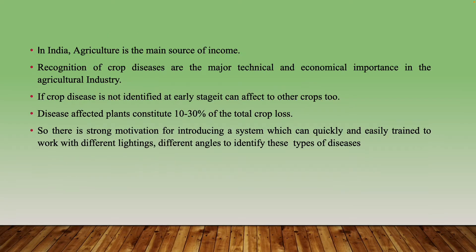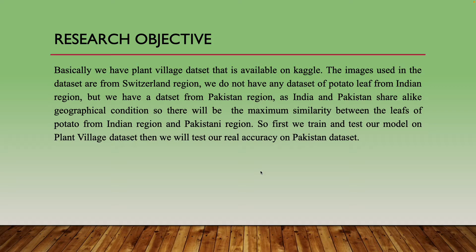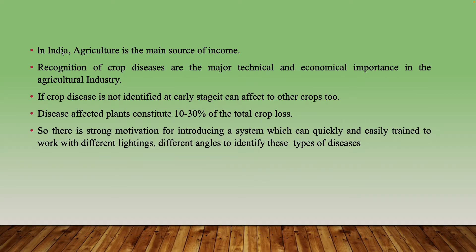The treatment for early blight and late blight are different, so it is important to accurately identify what kind of disease is present in the potato plant. In India, agriculture is the main source of income. Plant diseases constitute 10 to 30 percent of total crop loss, providing strong motivation for this system.